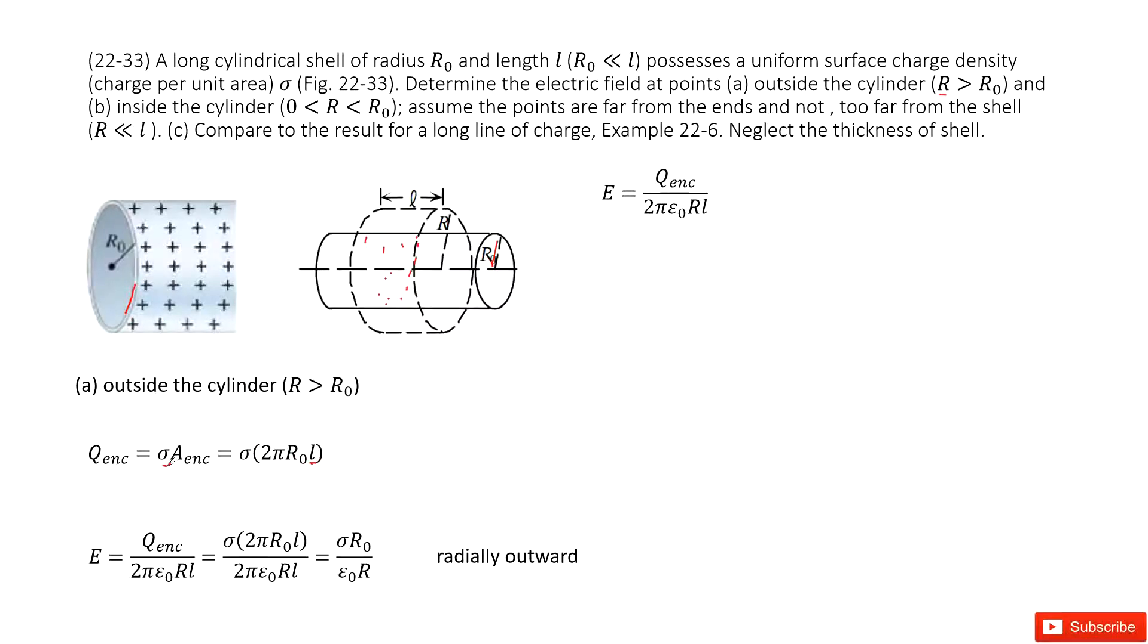Now we input this enclosed charge inside. You can see 2π, 2π, L, L canceled. We get the answer look like this one. This is radially outward.